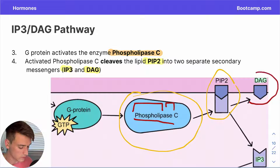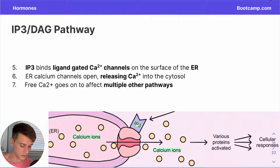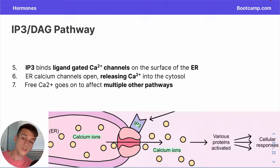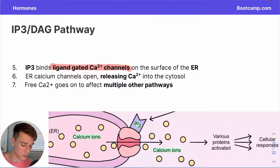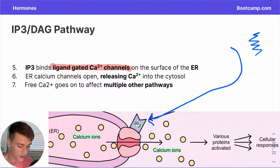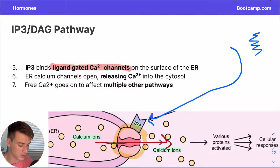Here we can see our DAG and IP3. DAG is set aside to be productive in other pathways; IP3 carries on toward our calcium release goal. The secondary messenger IP3 goes over to the endoplasmic reticulum and directly binds a ligand-gated calcium 2+ channel on its surface — the ligand being IP3. Once the ligand-gated channel is bound with IP3, it opens and allows calcium to flow out into the cytosol of the cell.